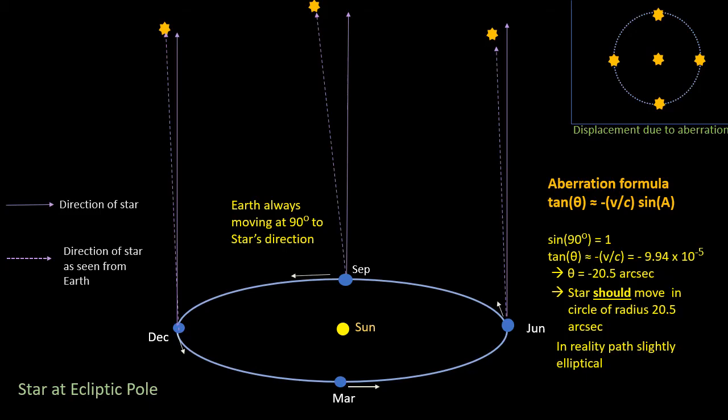So, stars should then move in a circle of radius 20.5 arc seconds, very small circles. In reality they don't, because the Earth's velocity around the Sun varies a little. It's faster when it's closer to the Sun, and slower when it's further away.